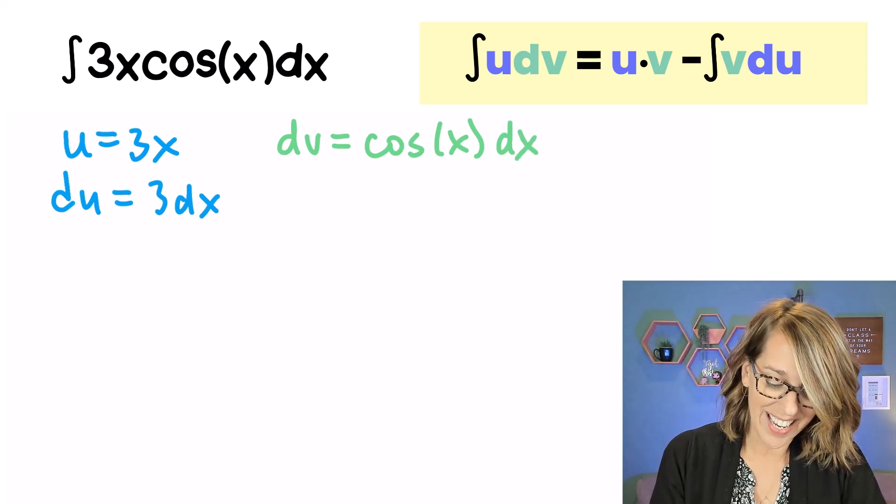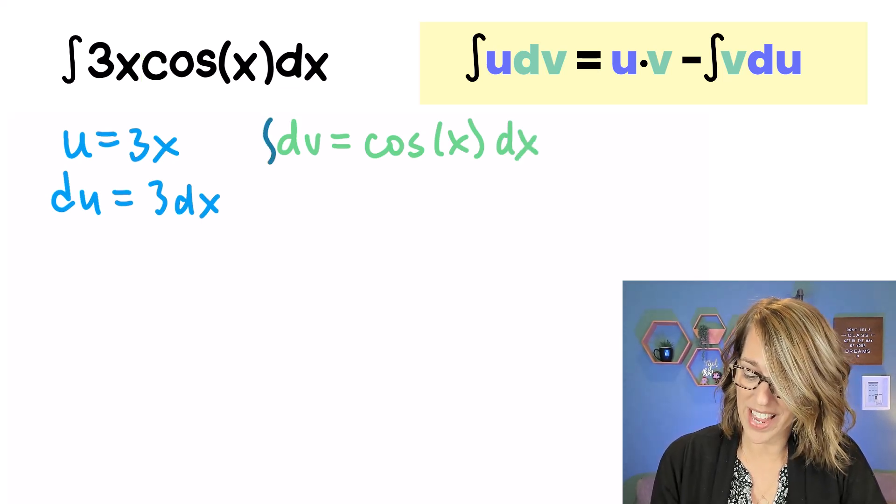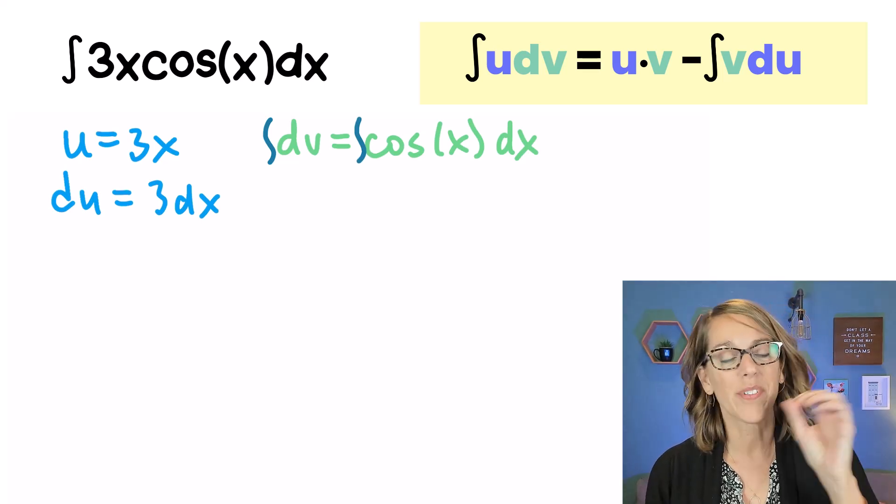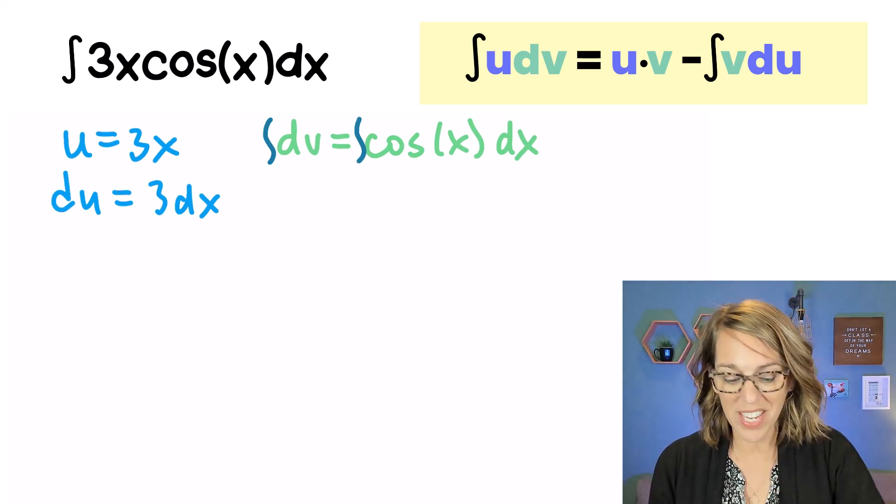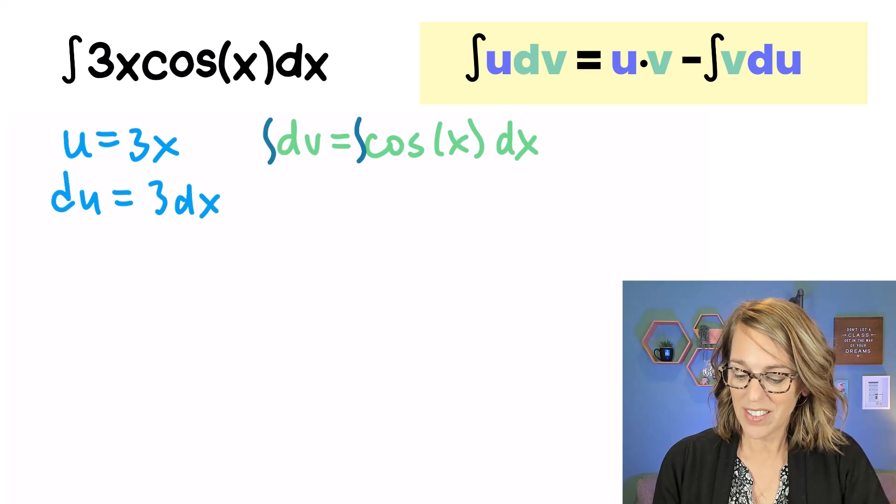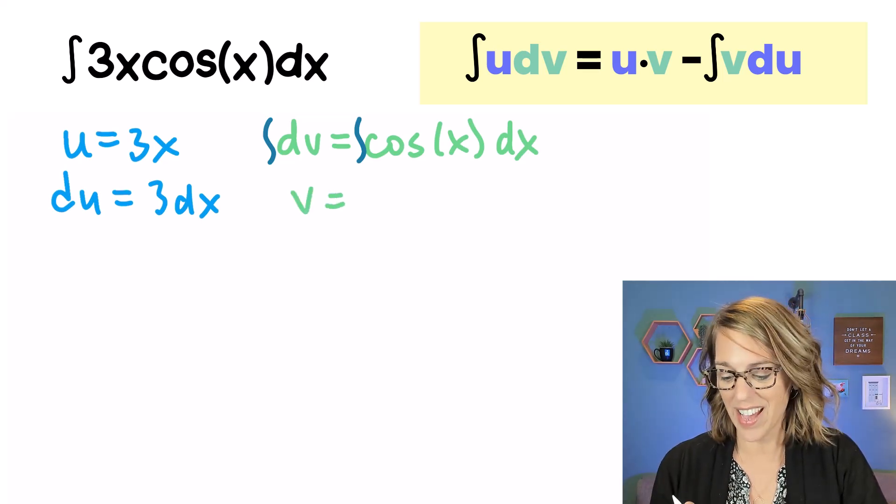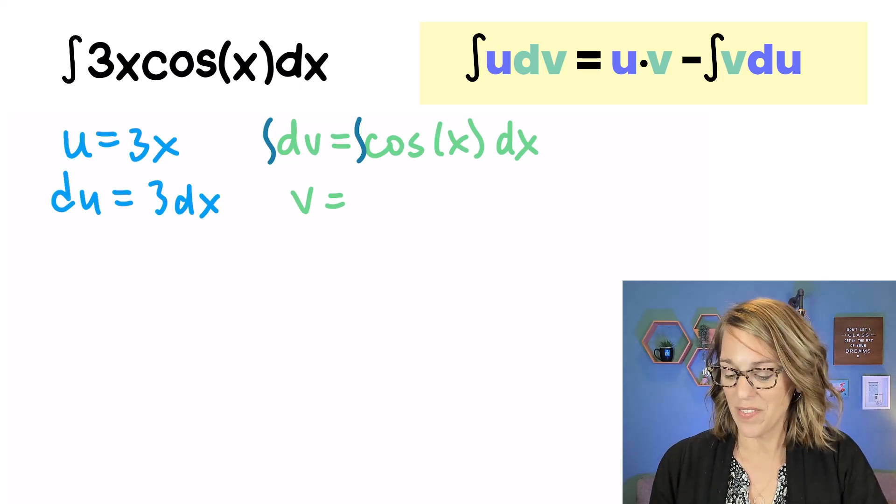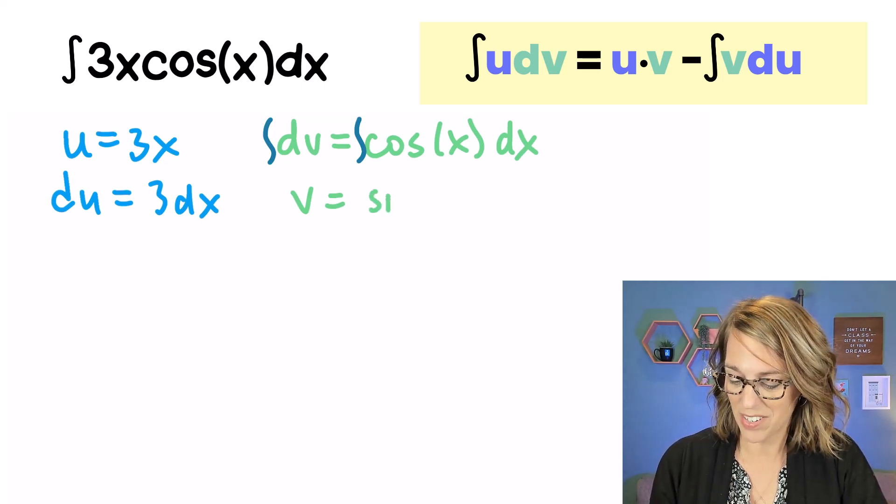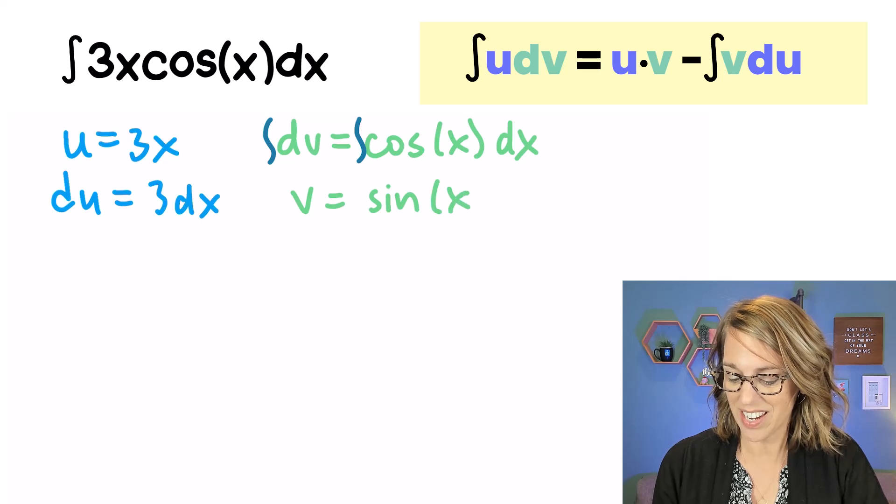I need to take an integral or the antiderivative of both sides of this to figure out what v is going to be. So as I take the integral, I'm not going to worry about plus c's or anything like that, but its antiderivative is sine. So my antiderivative is the sine of x.